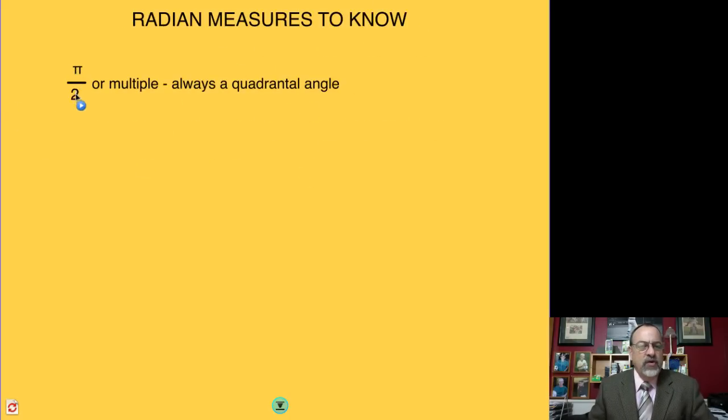If you have π over 2, actually if you have any denominator of 2, in other words if you're looking at 3π over 2, or 7π over 2, or 13π over 2, it doesn't matter what the numerator is. If the denominator is a 2, then you're going to be on what we call a quadrantal angle, meaning the angle is going to be formed by two axes, so they're going to be actually multiples of 90 degrees.